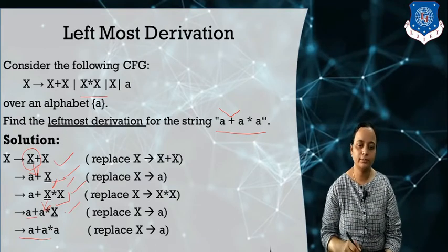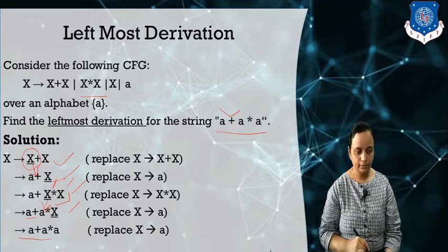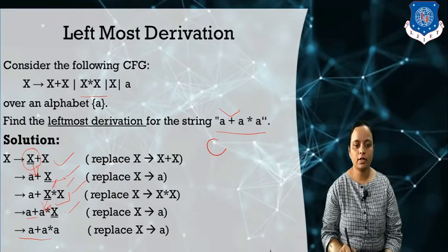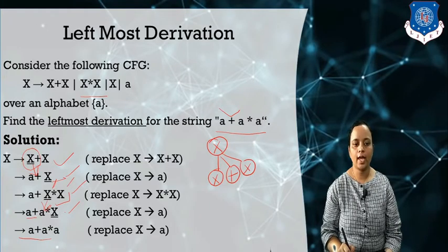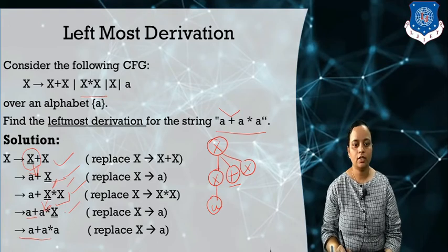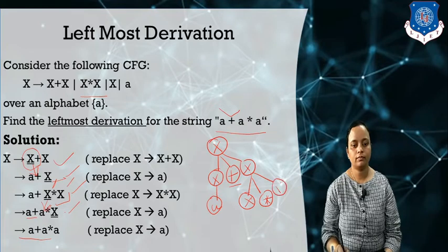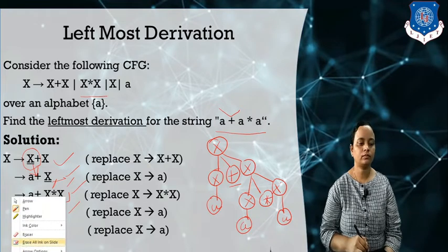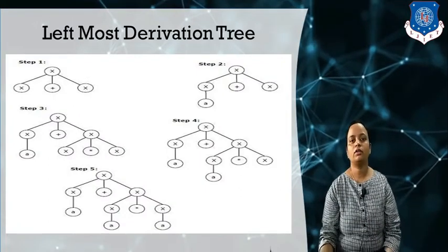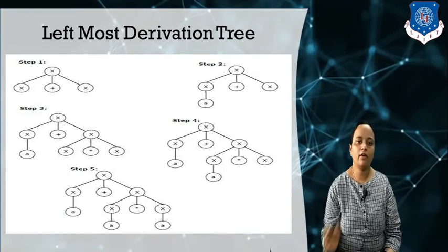Now suppose I want to generate the derivation tree for this. Start with X as the root node. X expands into three children: X, plus, X. Then the leftmost X is replaced by a — since a is a terminal, we cannot expand that node further. The right X expands into X star X, then each X expands to a. This is the derivation tree for the leftmost derivation of the given string.